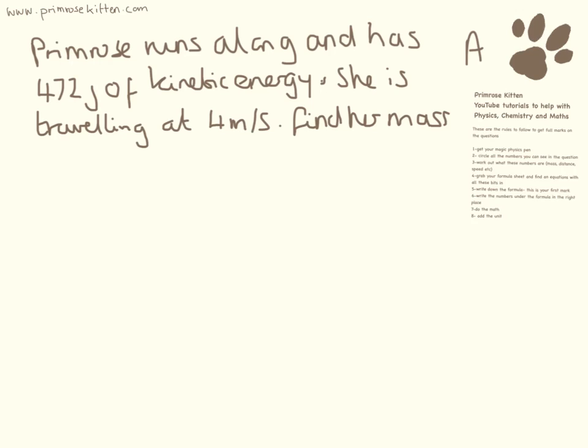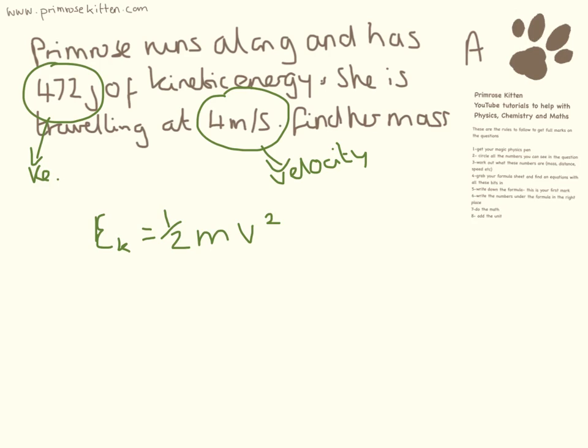So again, we're moving on to trickier questions now. Primrose runs along and has 472 joules of kinetic energy. She's travelling at 4 metres per second. Find her mass. So this is her velocity, and this is her kinetic energy. Kinetic energy is half mass velocity squared. So there are a couple of ways you can do this. You can either rearrange the equation, or you can put the numbers in and then rearrange it. That's what I like to do.